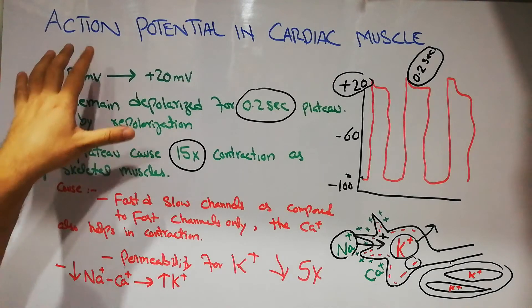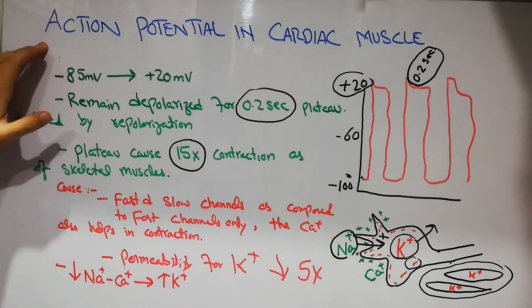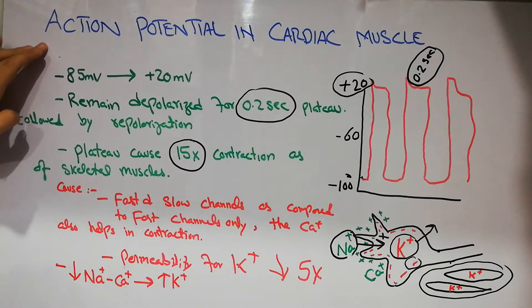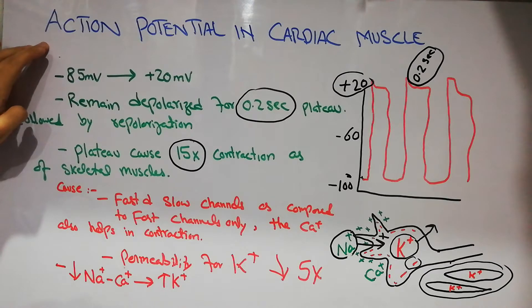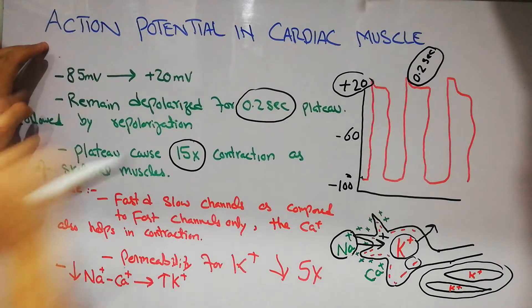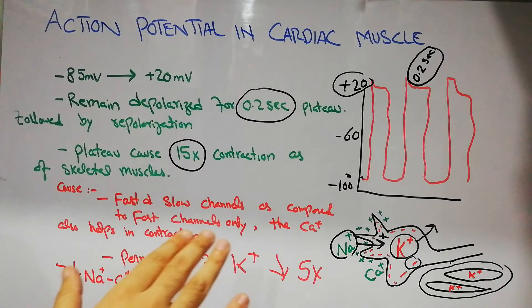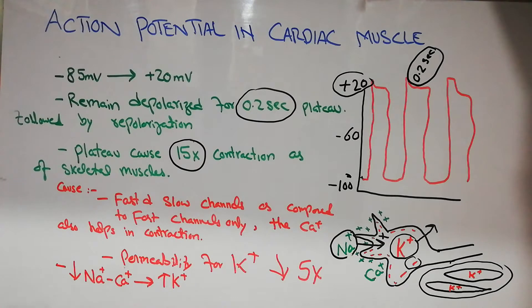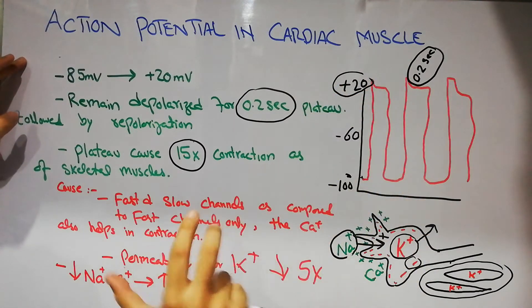In this lecture we are going to discuss the action potential in cardiac muscles. In the last few lectures we have been discussing the action potentials in nerve cells, action potential in skeletal muscles, action potential in smooth muscles, and now as we have started the cardiovascular system we are going to discuss the action potential in cardiac muscles as well. Action potential is basically a rapid wave of depolarization and repolarization along a membrane.